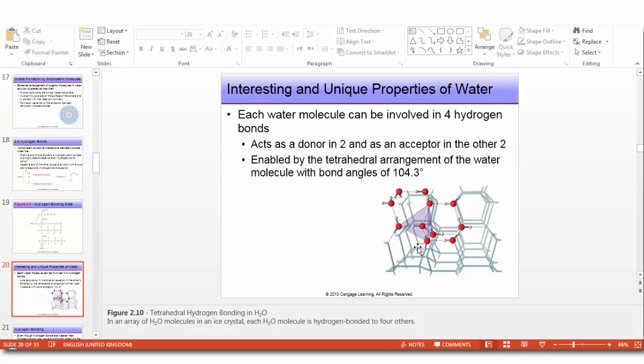When we say that water molecules can form 4 hydrogen bonds, this is in ice. In liquid it is less than about 2.3, and this is due to the constant breaking and reforming of the hydrogen bonds in liquid water.